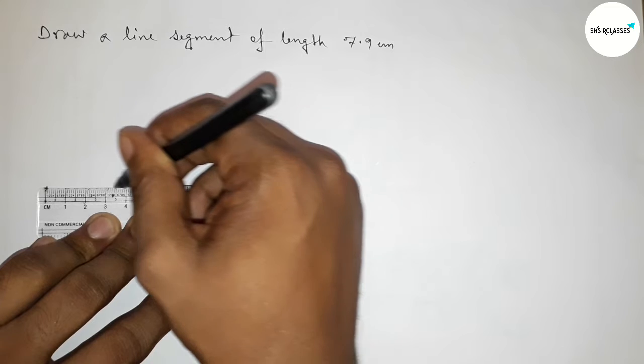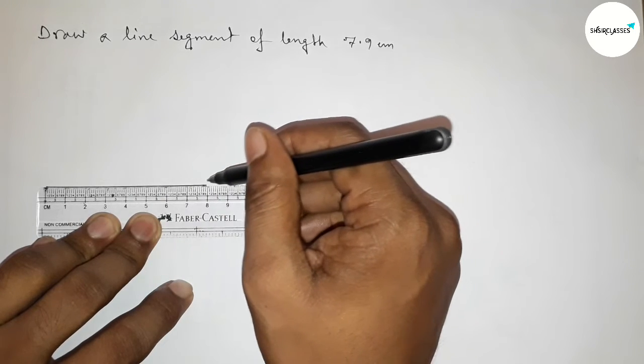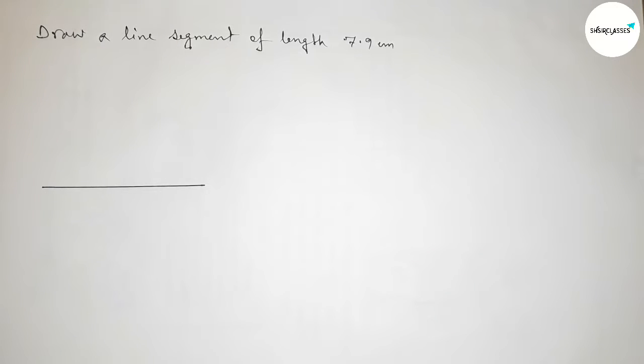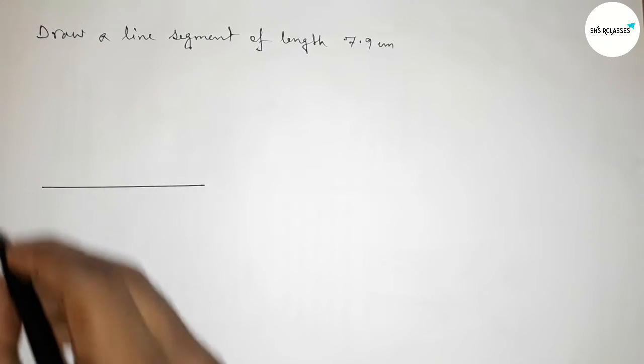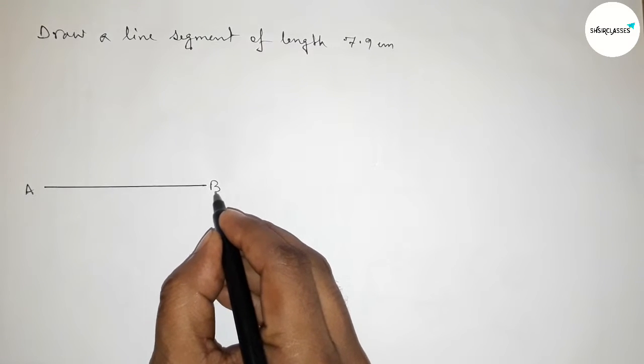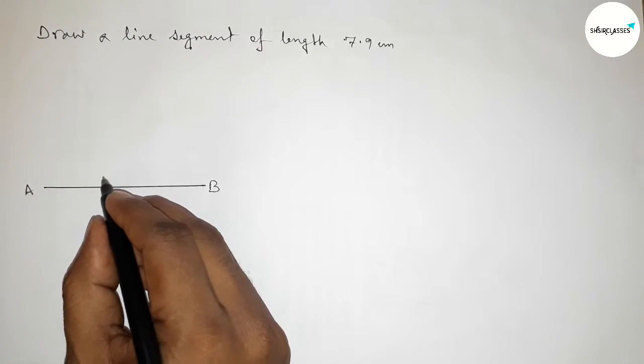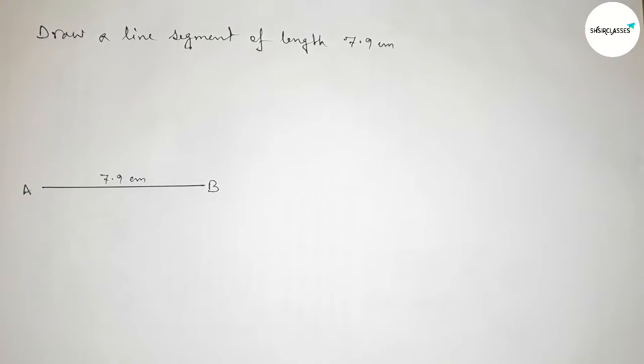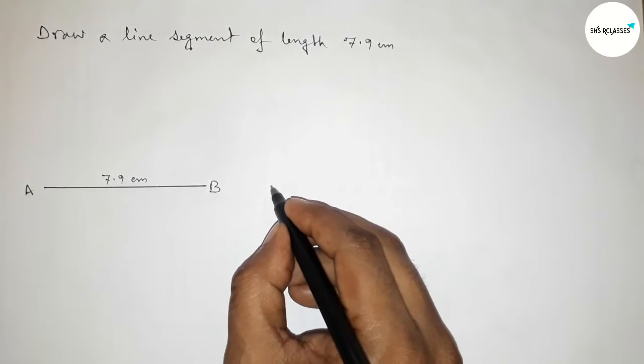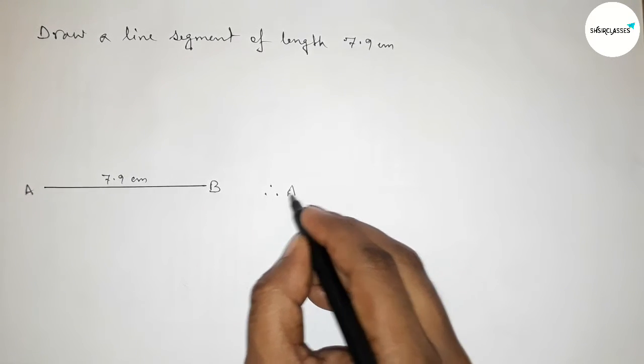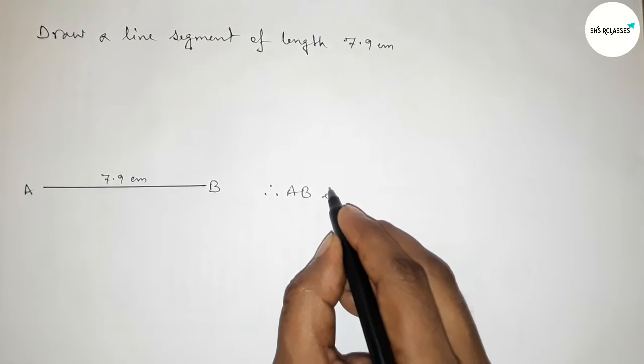Now join this line perfectly and label the points as A and B. So AB is a line segment of length 7.9 centimeters.